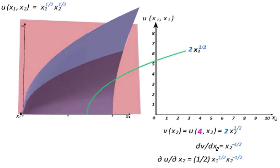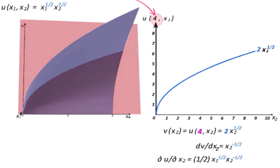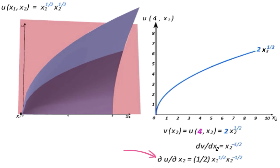We can then evaluate this partial derivative for different values of x1. So if we set x1 equal to 4, for instance, we're again operating on the slice where we've held x1 equal to 4, which is the function v equal to 2x2 to the 1 half. We already found the slope of this function to be x2 to the minus 1 half. We can now find that same slope using our general expression for the partial derivative of u with respect to x2 — which is 1 half times x1 to the 1 half times x2 to the minus 1 half. Plugging x1 equal to 4 gives 4 to the 1 half, which equals 2, times 1 half gives 1, so we're left with x2 to the minus 1 half.